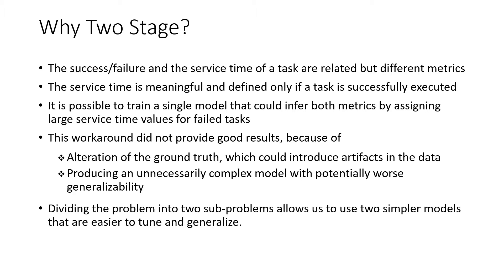You may ask why our solution includes two stages — our paper reviewers also asked. We started our study with a one-stage solution and tried to find the best option to offload with one machine learning algorithm. However, we could not get promising results because the offloading result and the service time of a task are related but different metrics. The service time is only valid when the task offloading result is successful. We tried to use higher service time values for failed tasks, but this approach alters the dataset and introduces artifacts in the data. Dividing the problem into two sub-problems allows us to use two simpler models with different input features that are easier to tune and generalize.